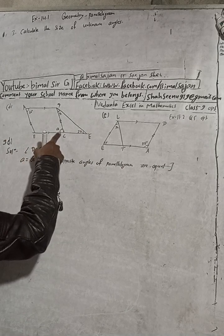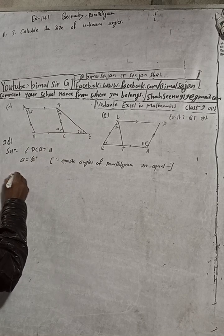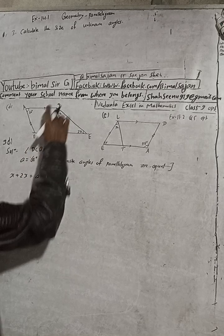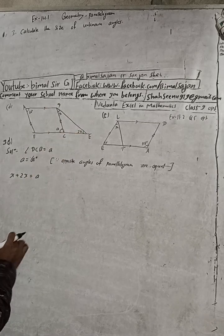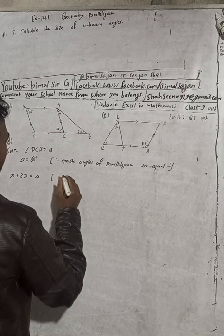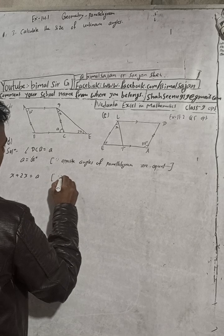Now this we know a is equal to 60 degrees. Now we can write x plus 2x, x plus 2x is equal to a. You angle plus you angle, which is equal to a. Now because exterior angle.